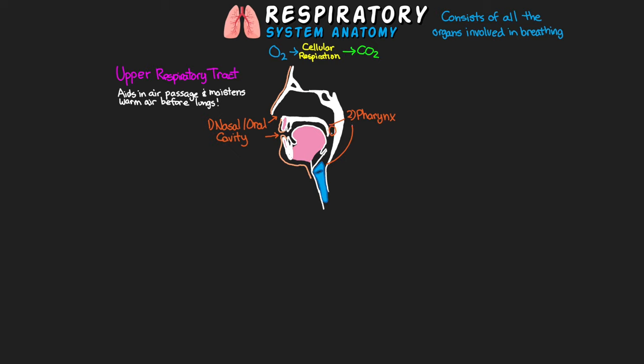The pharynx is composed of three different parts above the epiglottis and larynx: the nasopharynx, the oropharynx, and the laryngopharynx. The laryngopharynx connects to the esophagus, and it's at this point where the common pathway of the respiratory and digestive systems diverges. This is where we have that flap of connective tissue called the epiglottis, which closes to cover our airway and prevent aspiration.